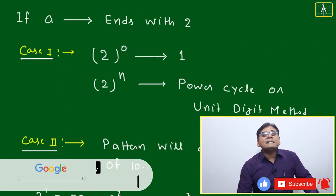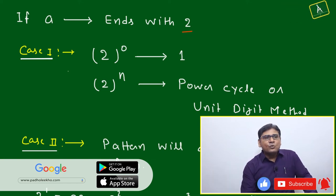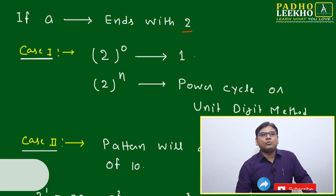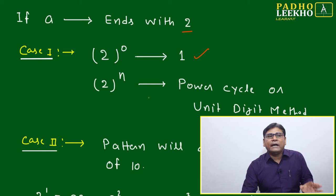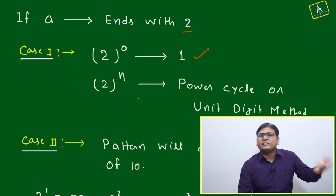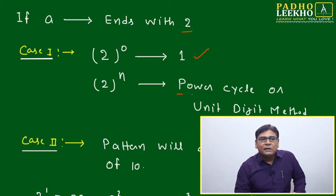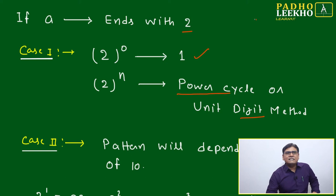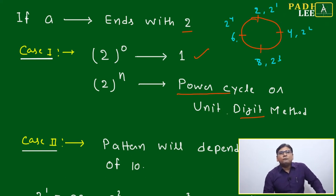Now we'll discuss the special case where A ends with 2. Case 1: if it is a single digit number — meaning 2 itself — then for 2 to the power 0, 1, or 2 to the power n (any number like 2 to the power 1, 2 to the power 2, 2 to the power 32, or 2 to the power 135), you can find the unit digit using the power cycle method.